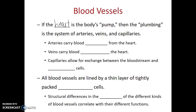Arteries are the blood vessels that always carry blood away from the heart, and veins always carry blood toward the heart. It's important to realize that the naming of the blood vessels doesn't really have to do with whether they are oxygenated or deoxygenated, but instead has to do with the direction in which the blood is flowing.